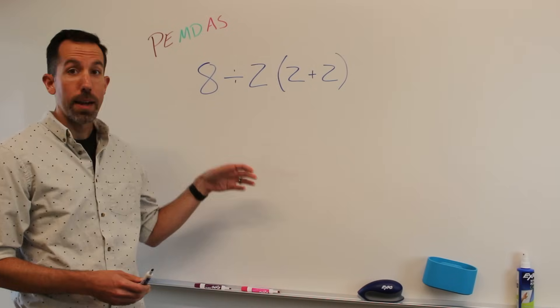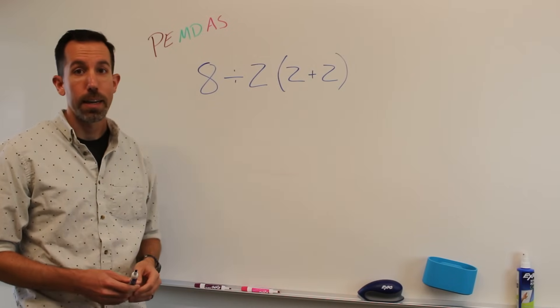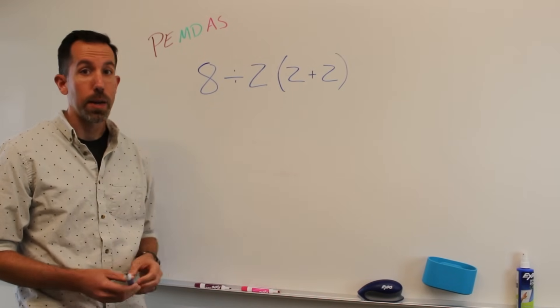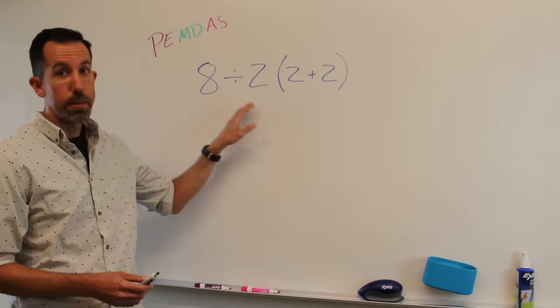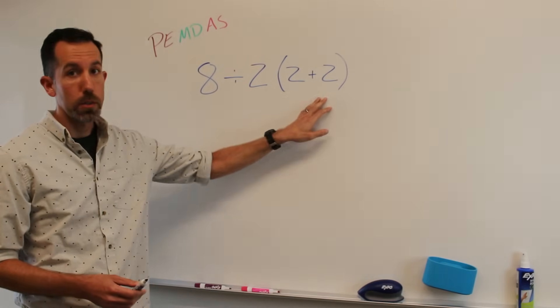And I want to solve this problem the correct way using PEMDAS and show you the correct solution to this problem. So we have here 8 divided by 2 and then 2 plus 2 in parentheses.